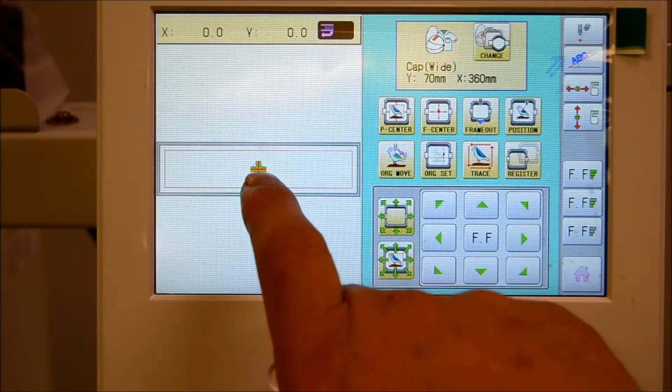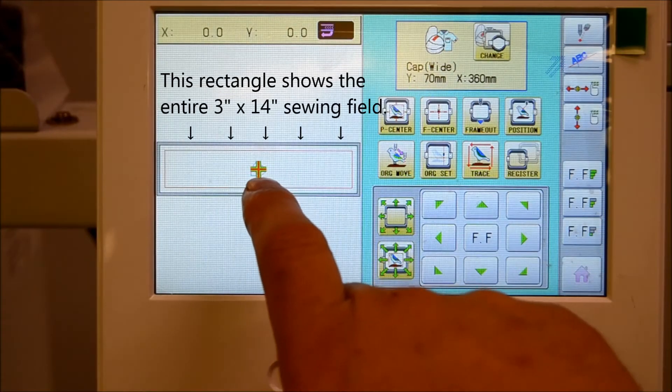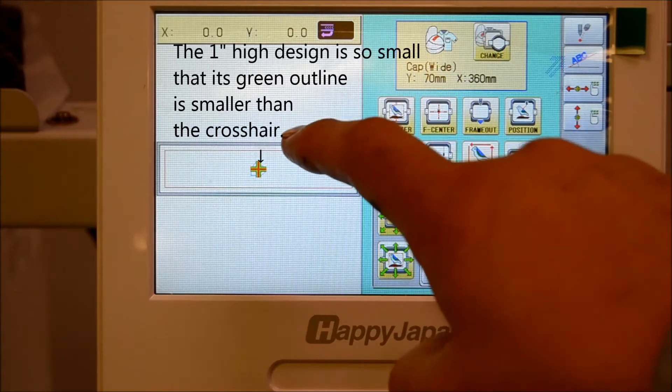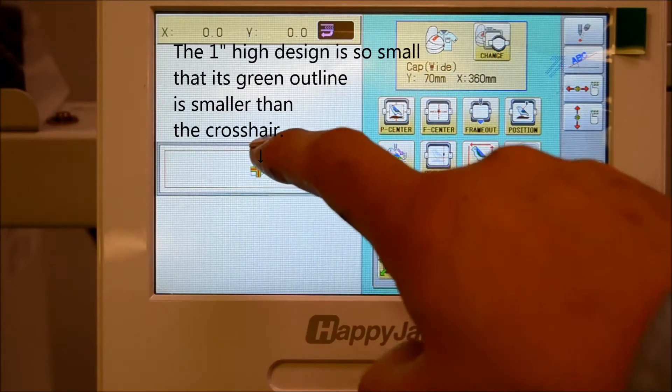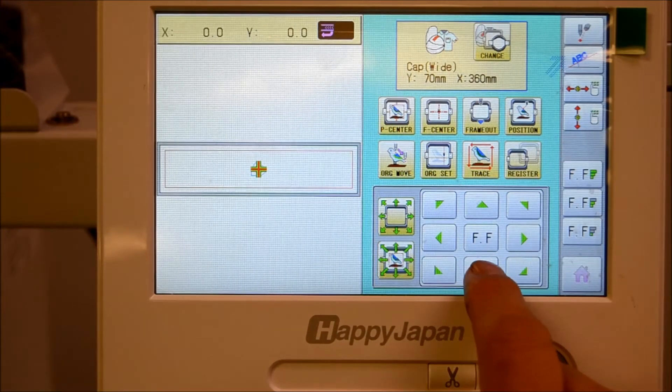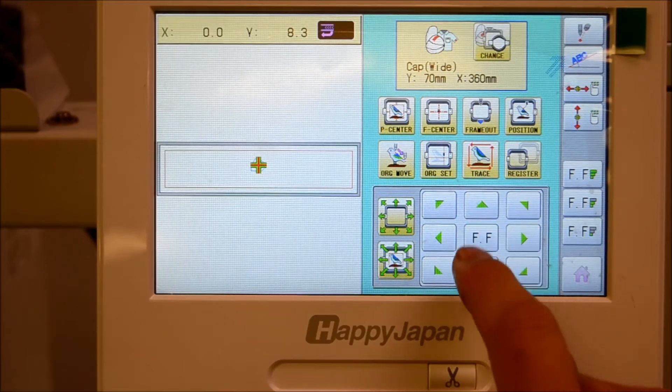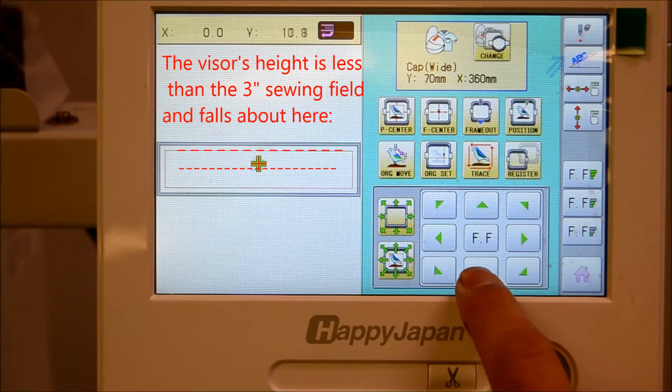Go ahead and press this button here and this green outline here is the position of the design so since we're sewing upside down we want to move as low to the field as possible so use your arrow keys to get it as low and as close to the bill as possible.